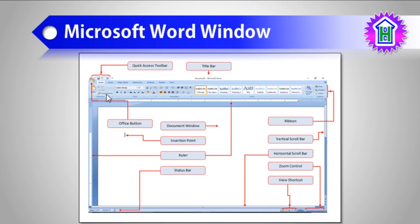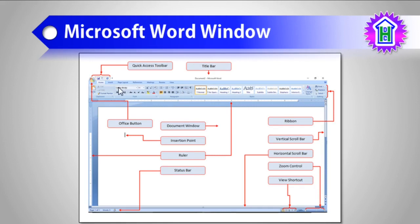The next thing you have to identify is the Tabs and the Command Ribbon. This rectangular area is called the Command Ribbon, and these are called Tabs. As you select a particular Tab, its corresponding Command Ribbon is displayed. So for every Tab, you get different options in the Command Ribbon.